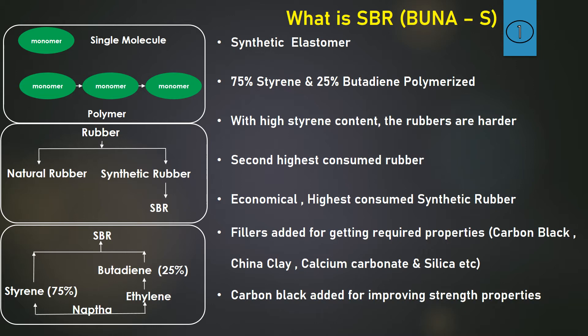Carbon black is added for improving strength properties. The basic raw material of SBR is naphtha, which is a byproduct of crude oil.